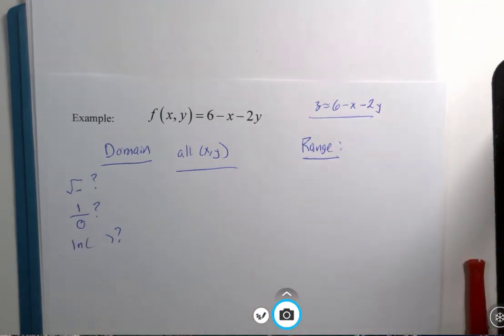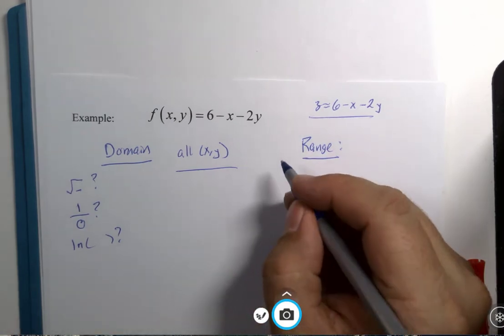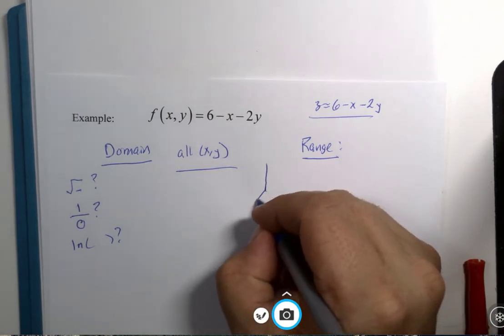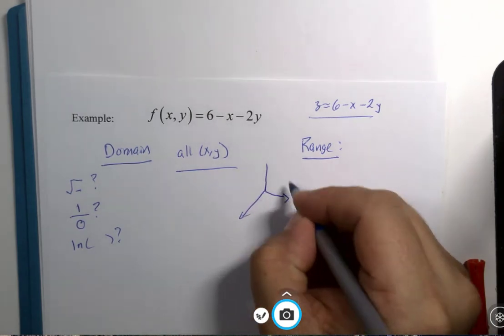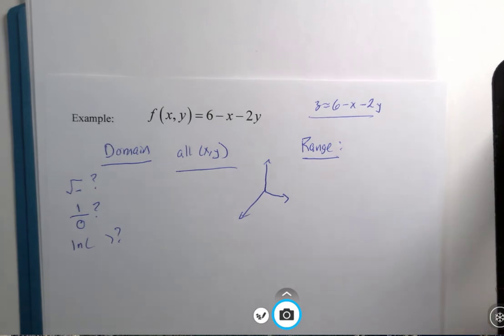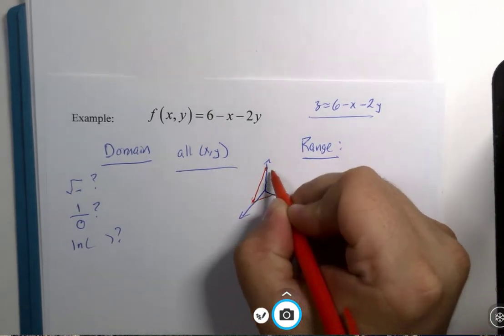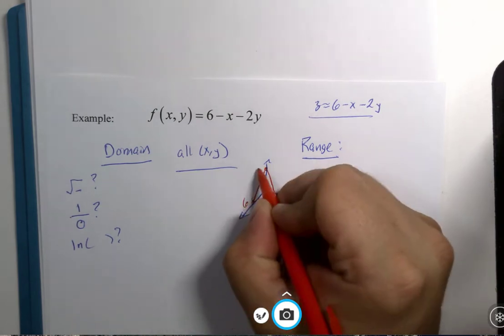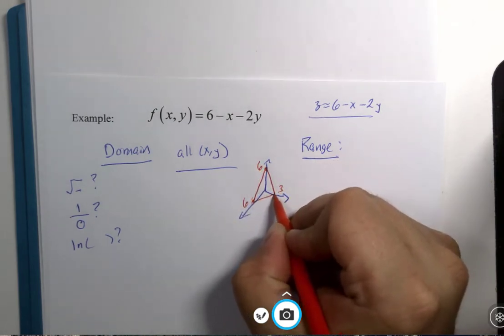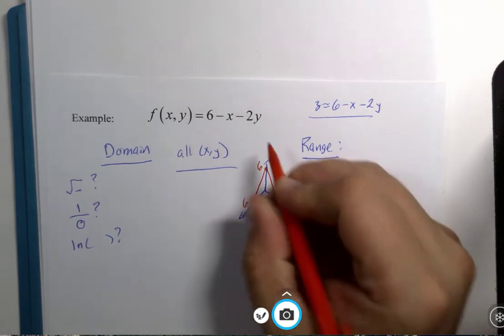But I wonder what kind of outputs there are. Well, once again, I think knowing something about the graph can help. And for this particular problem, the graph was a plane. It happened to hit at these intercepts for x, y, and z.